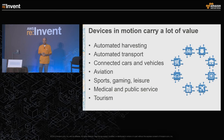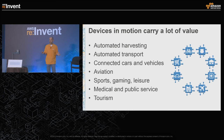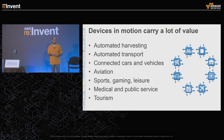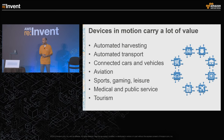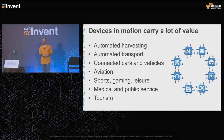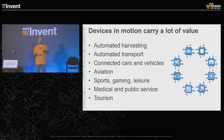Devices in motion — this was a great example of the value you can get from devices in the field even though they're moving. There are so many use cases: automatic harvesting, automated transport, drones delivering packages, connected cars like BMW showed yesterday — knowing when cars switch on windshield wipers for real-time weather data, updating maps, aviation, sports gaming and leisure, medical and public service, and tourism to give the right offers as customers move around a resource.